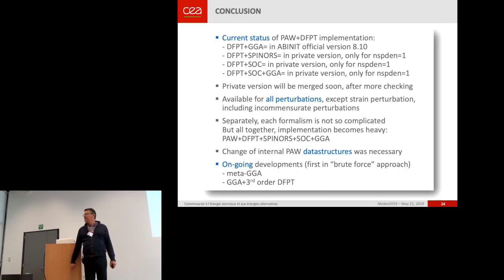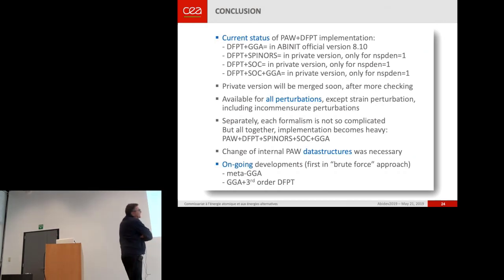So now my conclusion. Current status. So you can read that DFPT and GGA is okay. Spin-orbit, it's my private version. You know, we do not open versions for two reasons. First reasons, it's not ready because the checks have not been completely realized. And the second reason, you want to publish with this implementation.